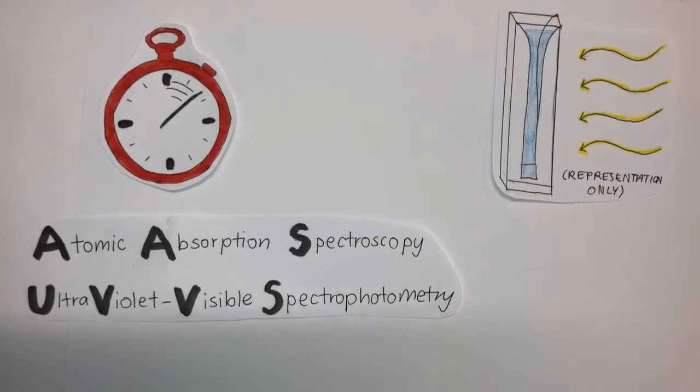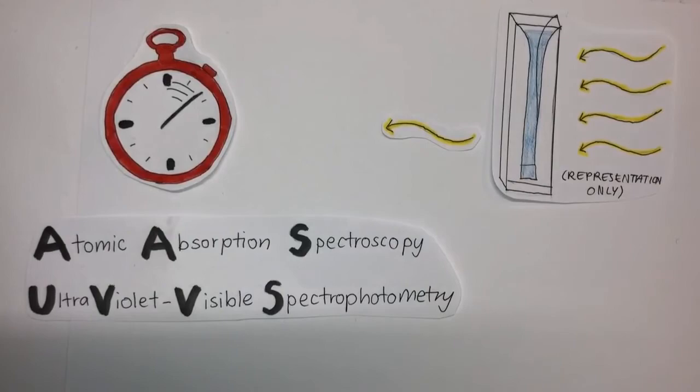Different chemicals absorb different wavelengths of light, and the light absorbed is proportional to the concentration. So as our reaction occurs and the concentrations in our sample change, so will the absorbance.